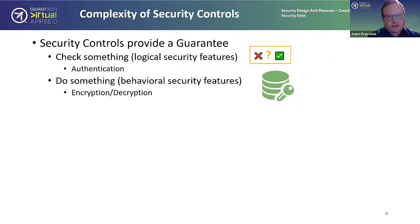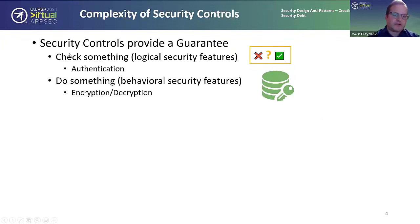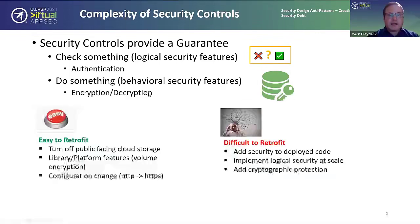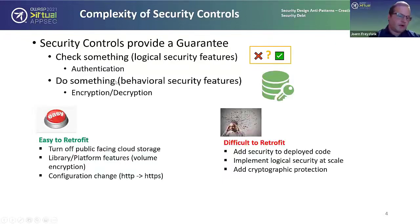Let's talk about complexity of security controls — not all controls are created equal. Security controls represent a function in the program, either as code or as an implementation that provides a guarantee. In the simplest form, they check something — a logical security feature like authentication. More complex ones implement behavioral security features like encryption or decryption. There's a scale to this, and when you have to retrofit controls later in the lifecycle, the difficulty varies. For example, turning off a public-facing cloud storage is an easy switch; using a library feature like volume encryption is relatively easy; changing data in transit from HTTP to HTTPS is also relatively easy.